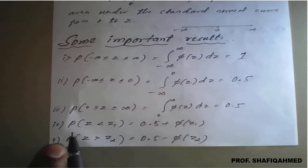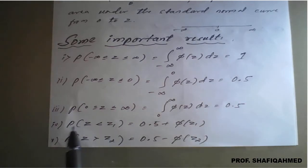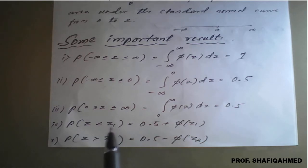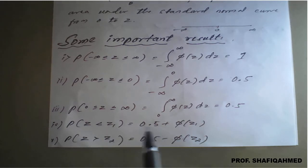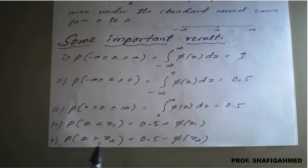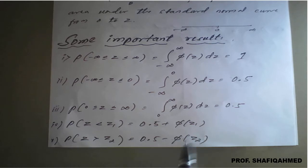These two results are very important. P of z strictly less than z1 is always represented as 0.5 plus φ(z1). And P of z greater than z2 means 0.5 minus φ(z2). These two are most important for simplifying examples.